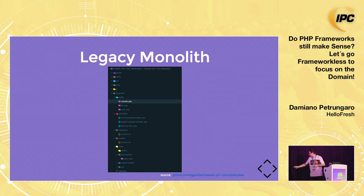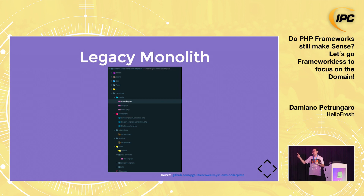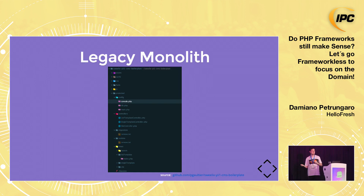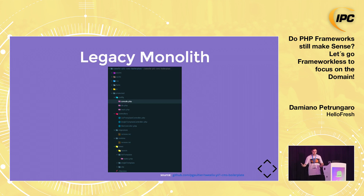But using a framework has a cost, and the cost is really, really high. This is a GitHub repository — it's using Yii 1. I have no idea how many years ago it was released. But this is the cost of our legacy monolith. If you are working in Berlin in a startup born thanks to Rocket Internet, probably you are using Bob and Alice — two huge PHP applications, one written in Zend 1, another one written in Yii 1. It's just a bootstrap for startups.